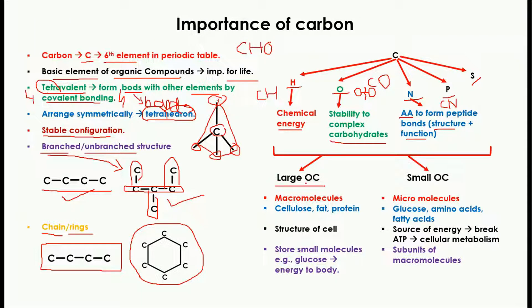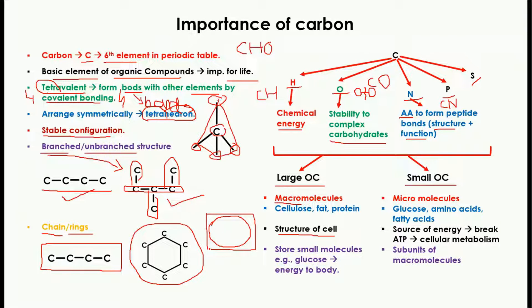Overall, organic compounds can be categorized into large organic compounds and small organic compounds. The large organic compounds are known as macromolecules — 'macro' meaning large. Cellulose, fat, and proteins are examples of macromolecules. These macromolecules are very important for the structure of the cell; for example, the cell membrane is made up of fat and protein, and the cell wall is made up of cellulose.